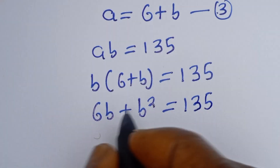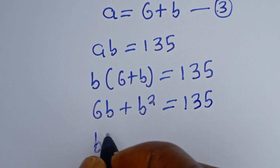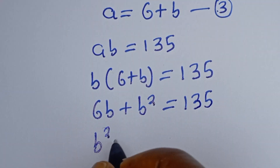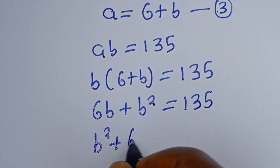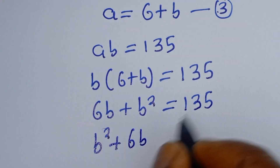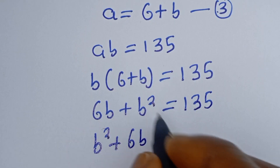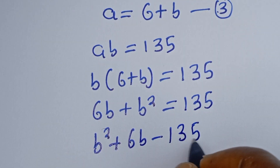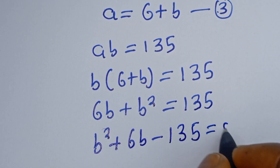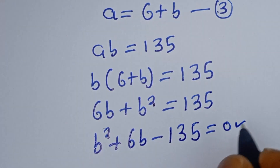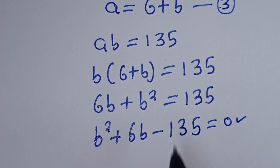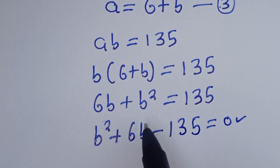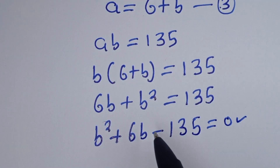Then this is B squared plus 6B. If you take 135 to this side, it becomes minus 135 is equal to 0. This is a quadratic equation which can be solved using the factorization method or the quadratic general formula.